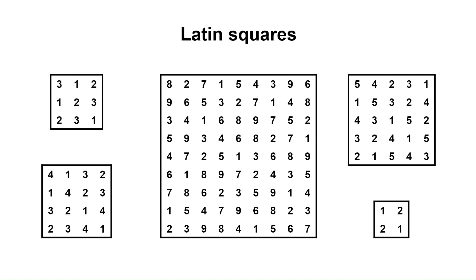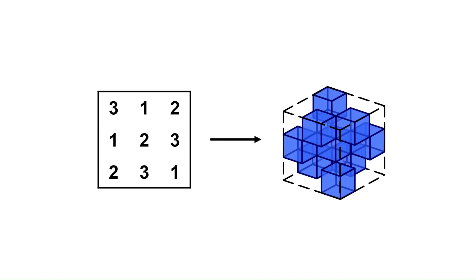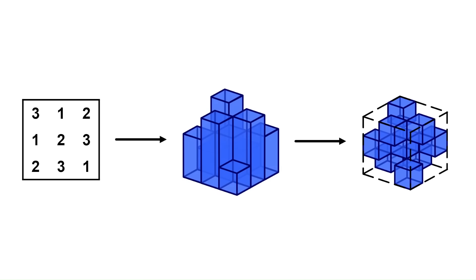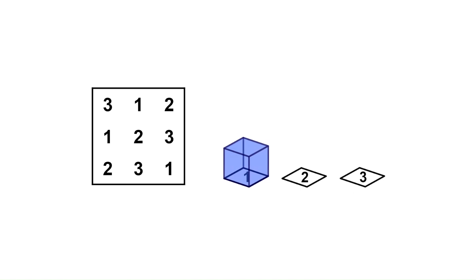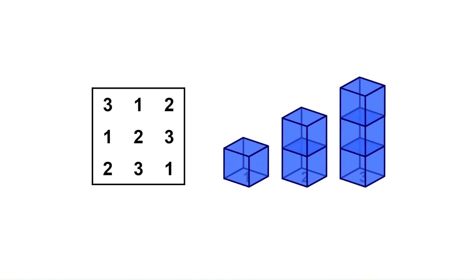It turns out that Latin squares can be used to make minimal patterns, and this is done by turning the Latin square into an elevation map. That is, on top of each grid cell, we'll build a tower whose height is the number in that cell.